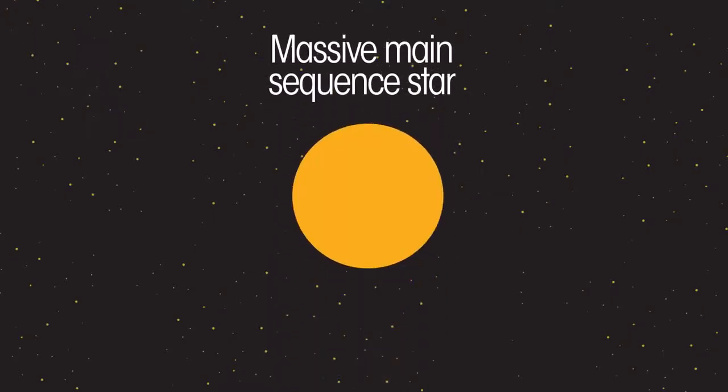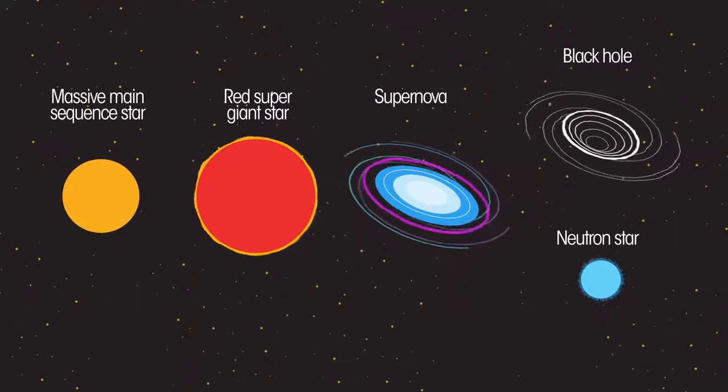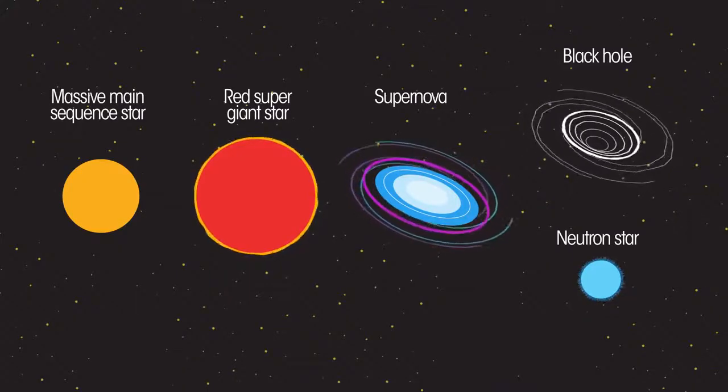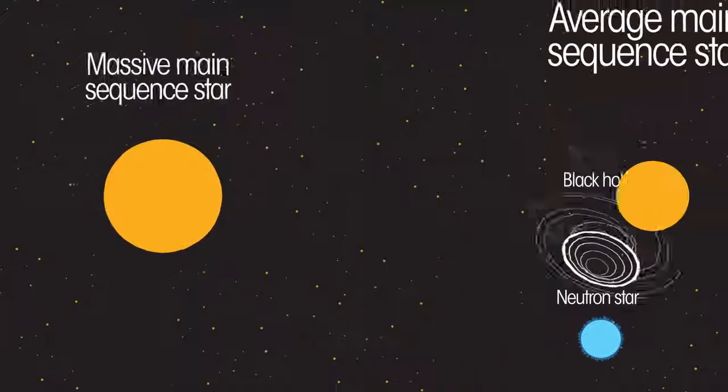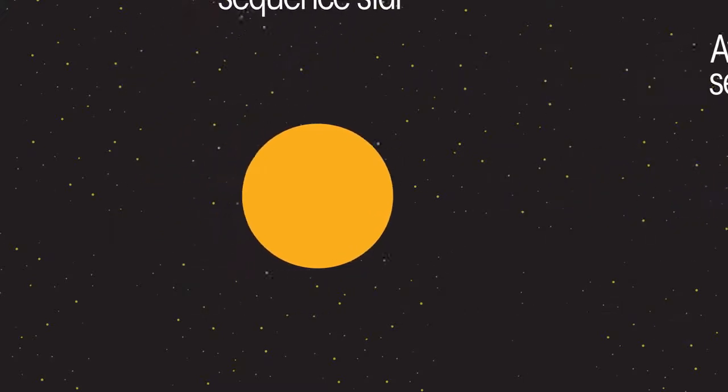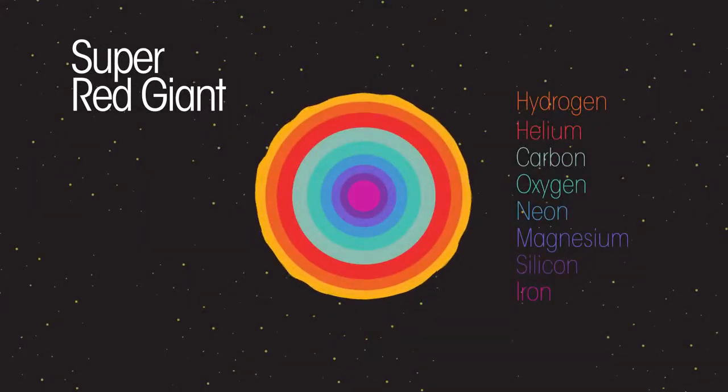So what about bigger stars? What happens to them? They follow a different pattern. These stars too eventually run out of hydrogen, but quicker than a smaller star would. Massive stars, as a result, have a much shorter main sequence life than smaller stars. These stars then expand to become super red giants, now full of all the elements up to iron.